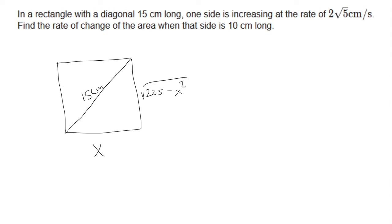Okay, so we took care of this. Now one side, it doesn't say which side, so we're just going to assume the side X just to make the algebra work nicely. So one side is increasing, that means derivative, at the rate of 2 root 5 centimeters per second. So second here meaning time. So that's just going to be dx over dt is 2 root 5.